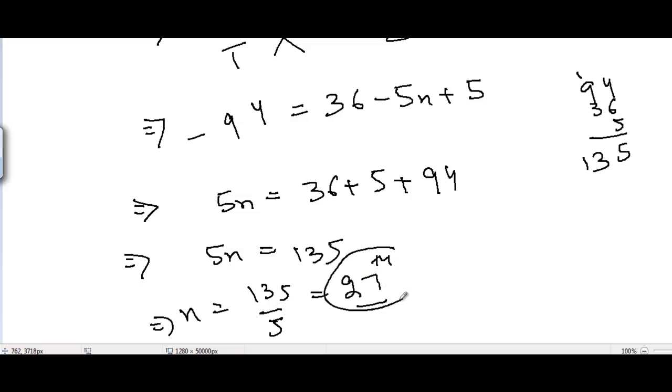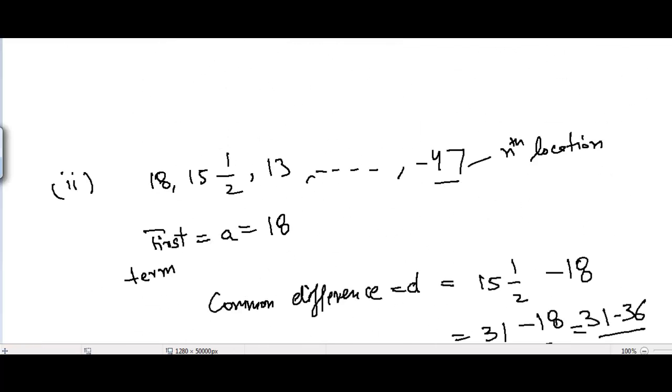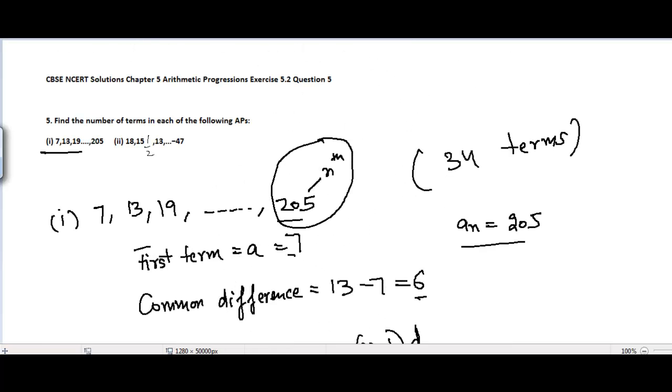So it means that there are 27 terms in the second AP which was given to us. It means that there are 27 terms in this and -47 is the 27th term.